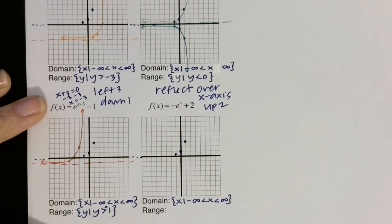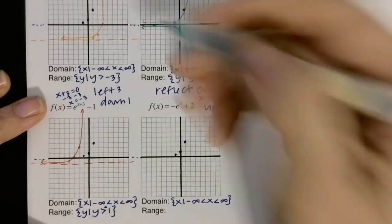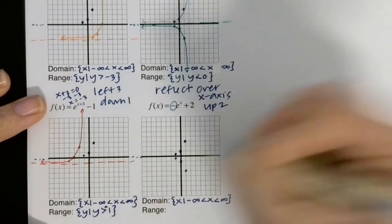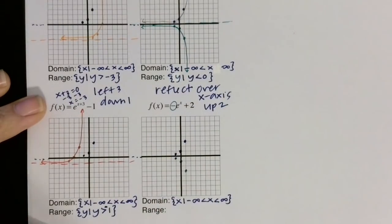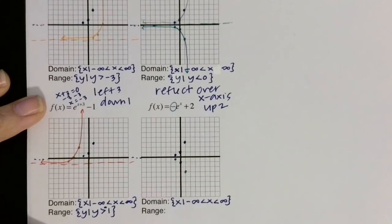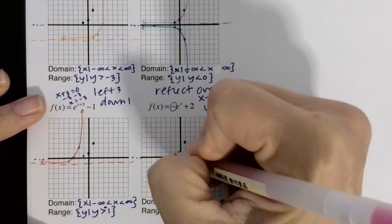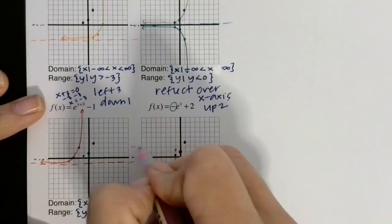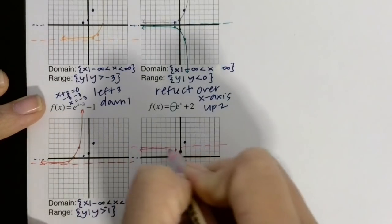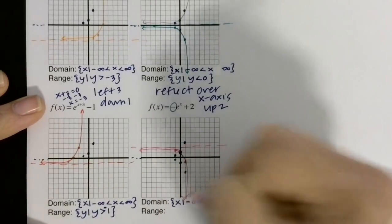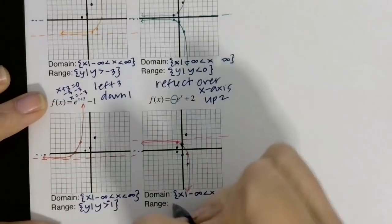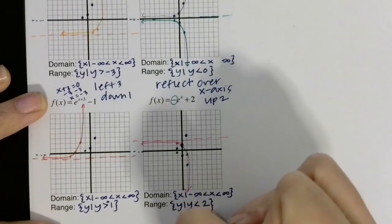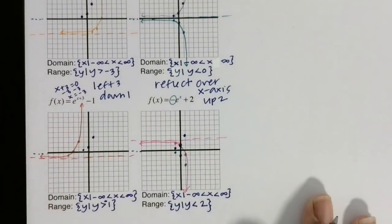This one, we do have another reflection, so we take care of this first, just like we did in the one above it. And those are the reflected points right there. And then we are going to move everything up 2. So 1, 2, 1, 2, 1, 2. And my asymptote gets moved. And then it's going to coast along and turn down. And for that range, we have y such that y is less than 2. Because of the reflection, we have to do the less than.